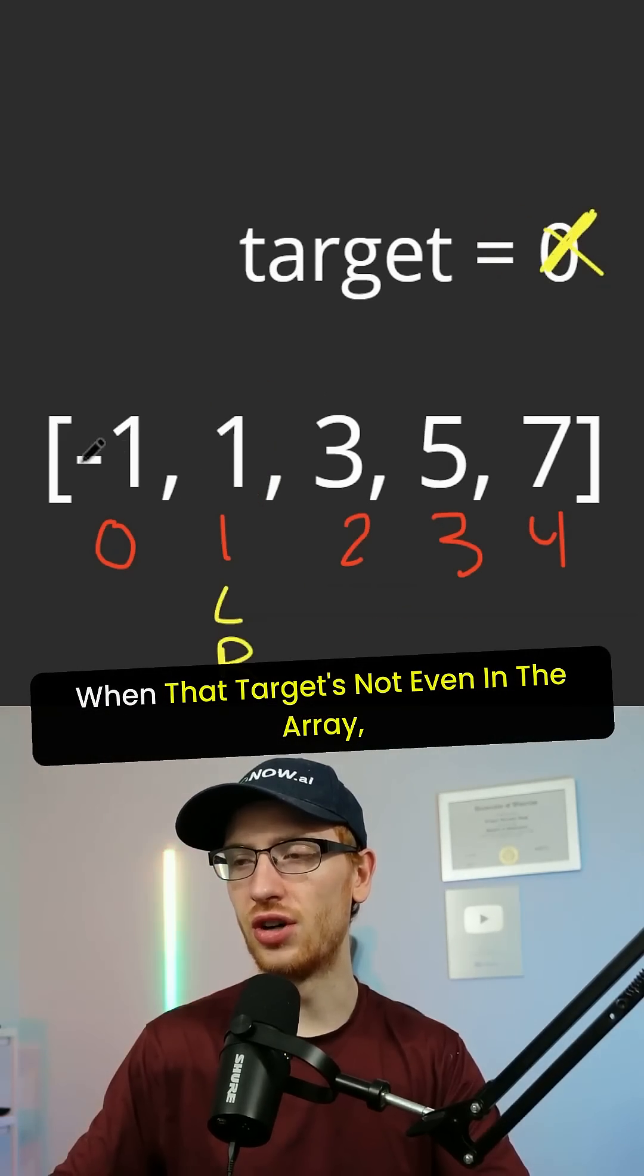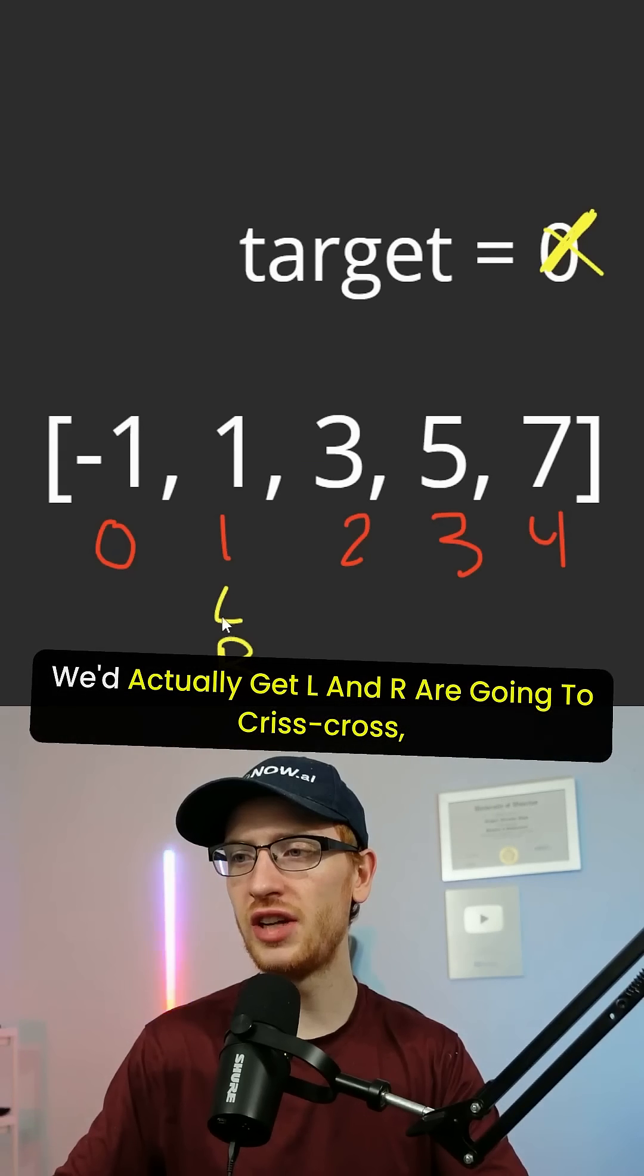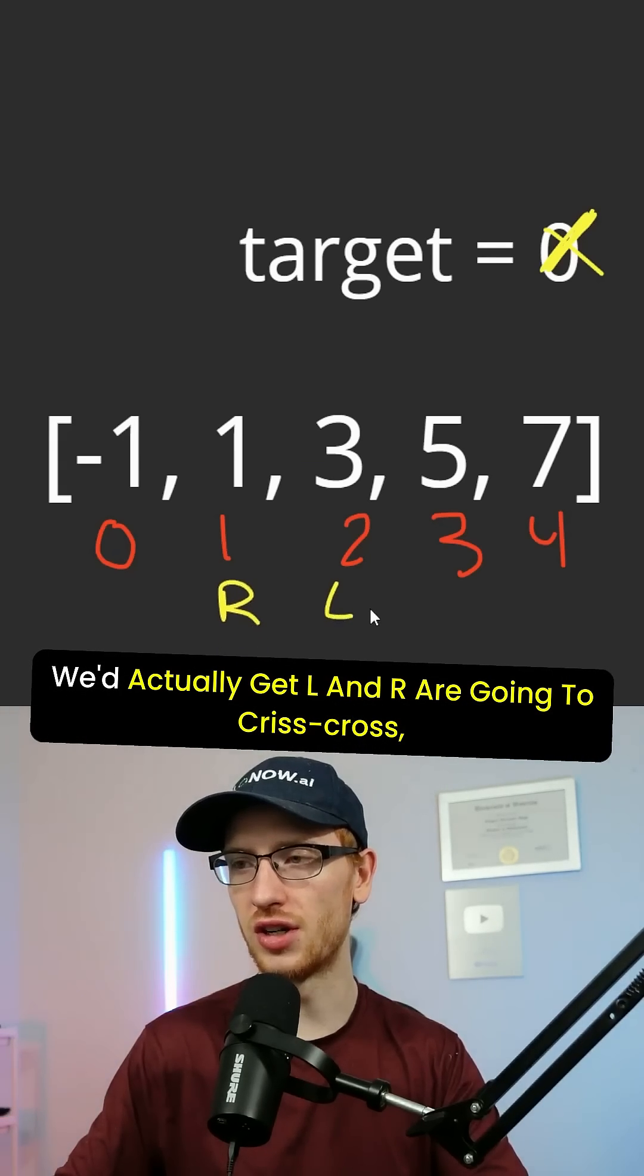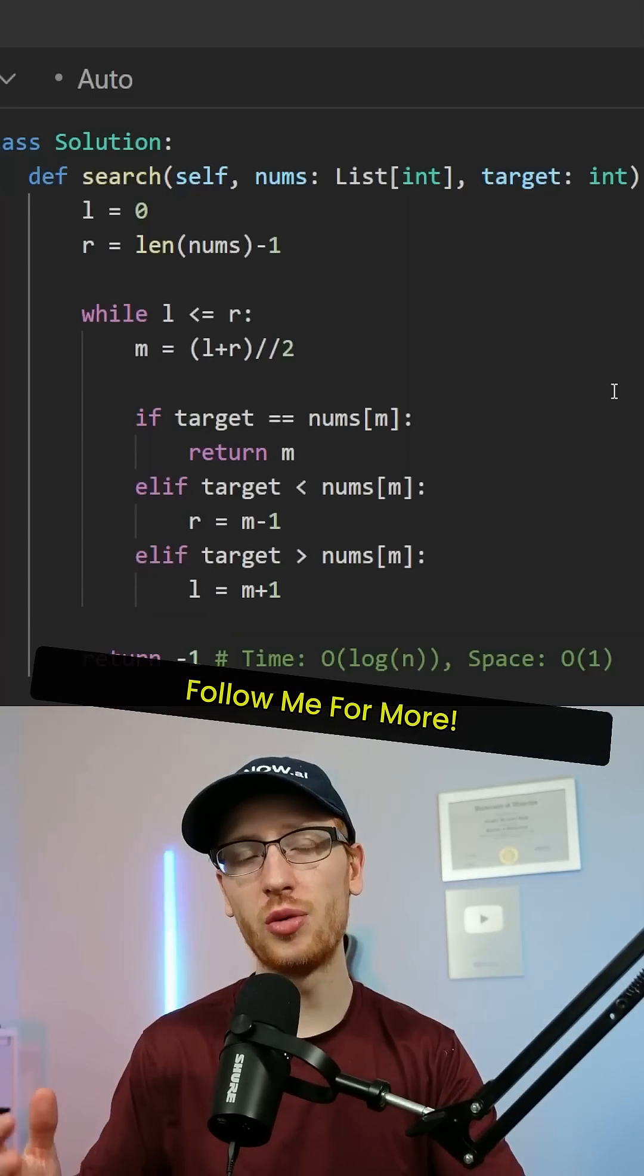Now in the alternate scenario, when that target's not even in the array, we'd actually get L and R are going to crisscross and usually return negative 1.